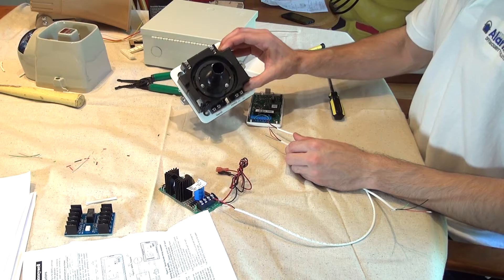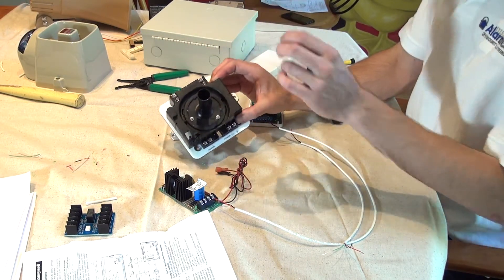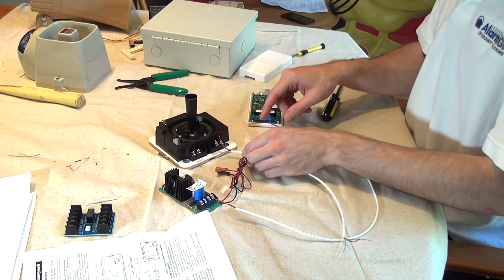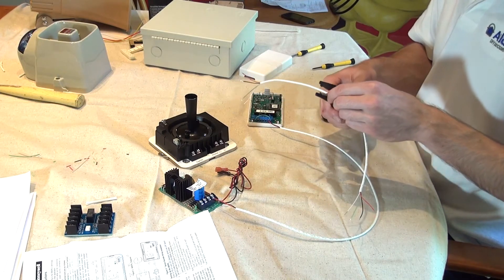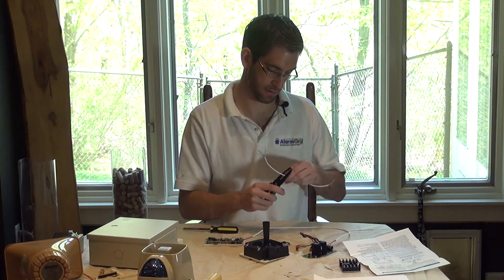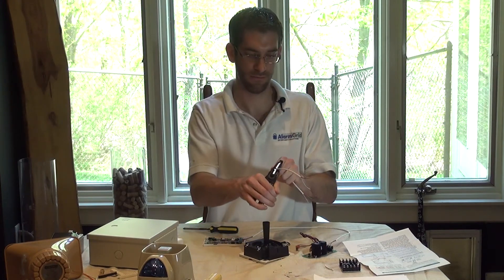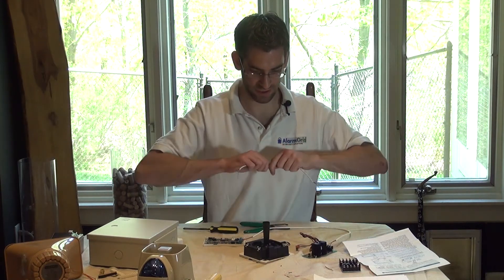Because on our siren, the siren is down here and the strobe is up here, if you're only going to cut down that much, you wouldn't be able to make these connections. So, we're going to strip this insulator back quite a bit more so that we can use just one connection.